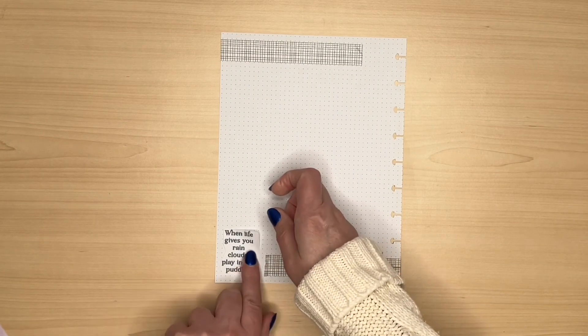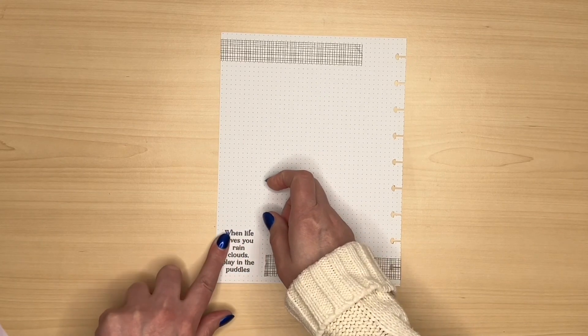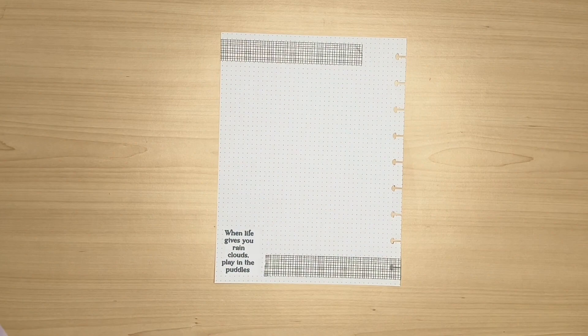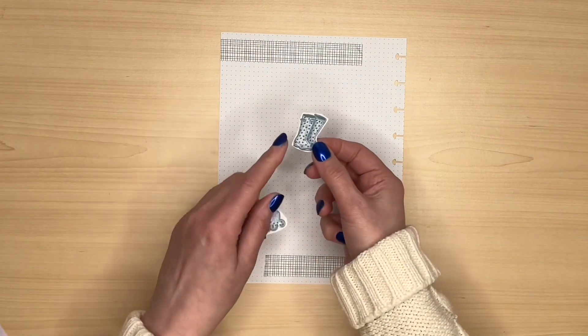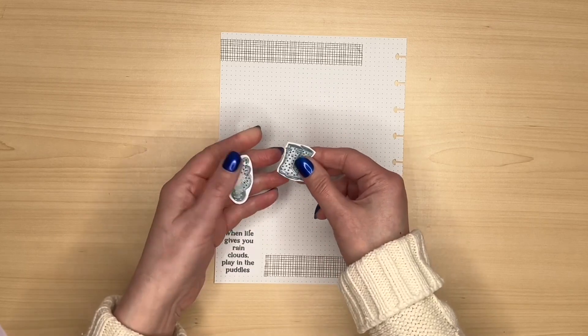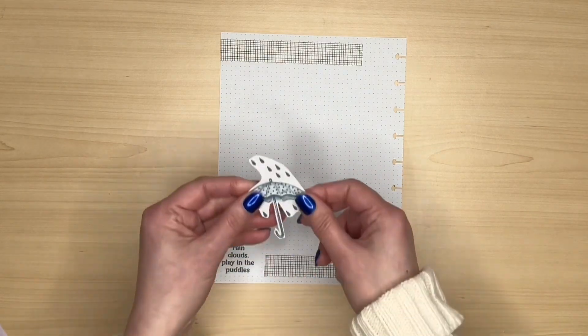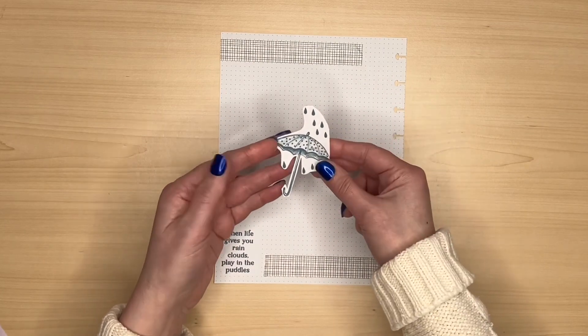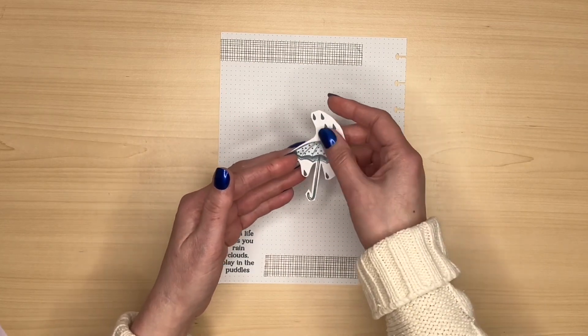I'm never quite sure whether to fussy cut around the images or just cut around them loosely. I think because I'm a card maker I usually fussy cut them which means cutting very closely around the edge but with this one the umbrella because I will want the raindrops I'm certainly not going to cut those out individually so I've left that all together.